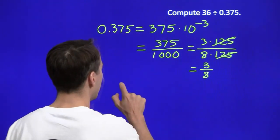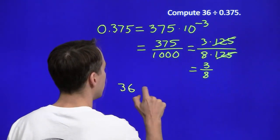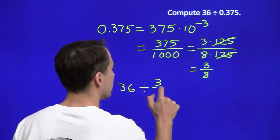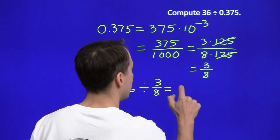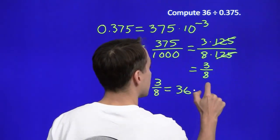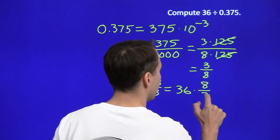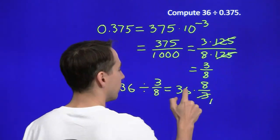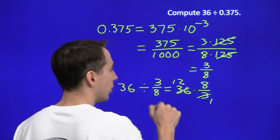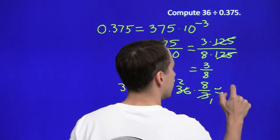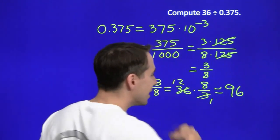So now our problem is just 36 divided by 3 eighths. And that is the same thing as 36 times the reciprocal of 3 eighths, which is 8 thirds. Knock out the factor of 3 here. We're left with 12 times 8 is 96. And we're done.